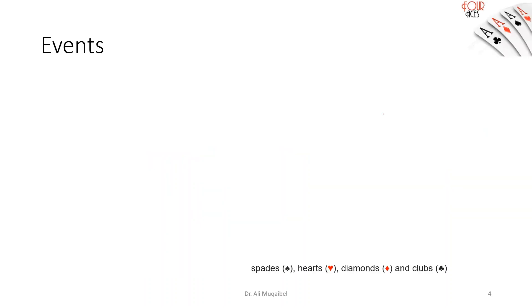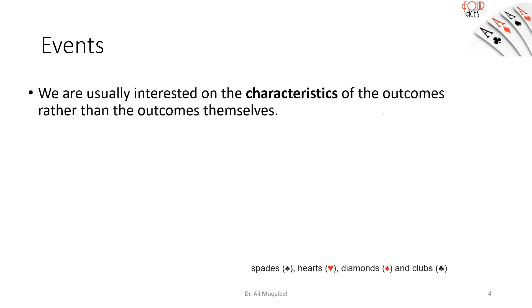Events: Once we have experiments, we have events, we have outcomes. Now we are usually interested in specific characteristics, like if we pick a person we want to know that he's short or tall or thin or fat, rather than being Mr. X or Mr. Y. Now a very popular example in probability is drawing a card from a deck of 52 cards.